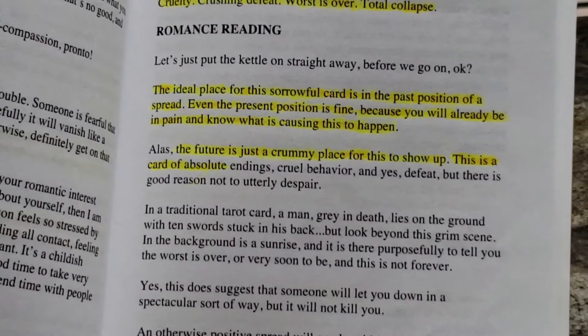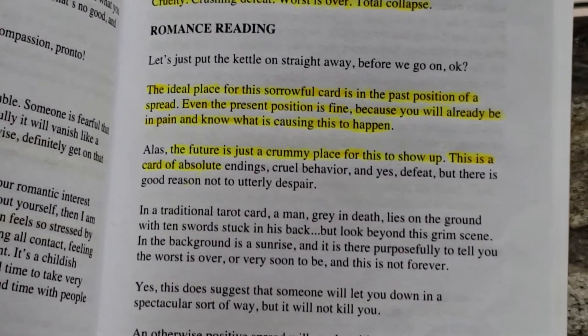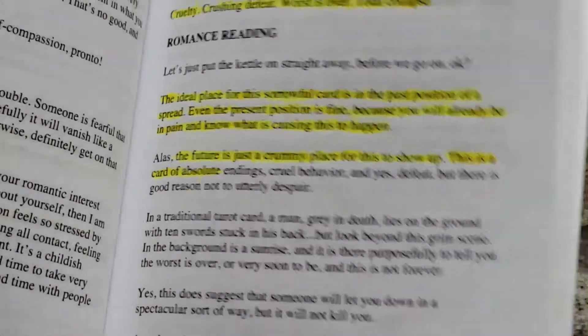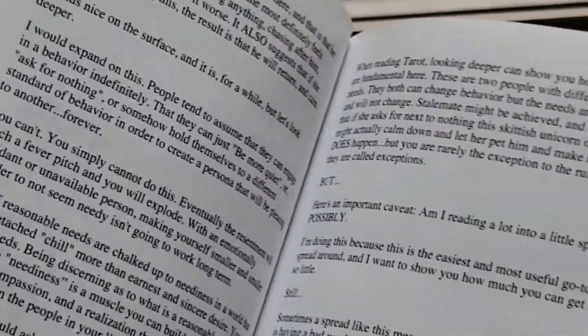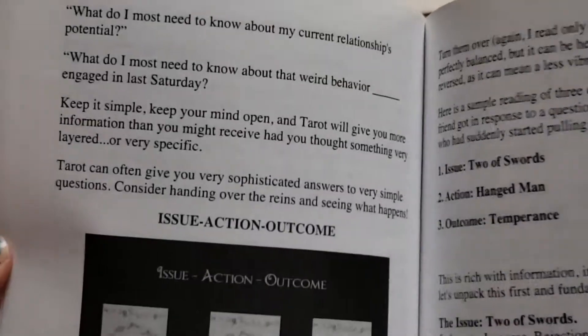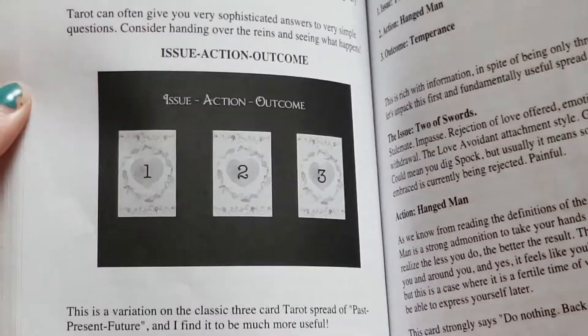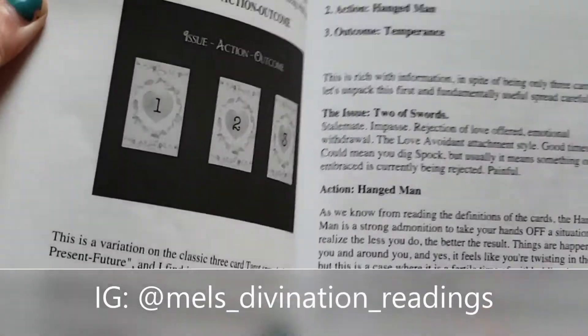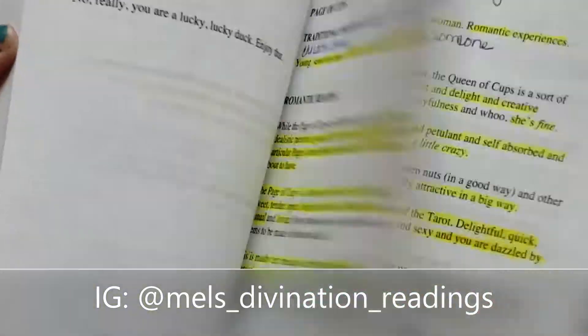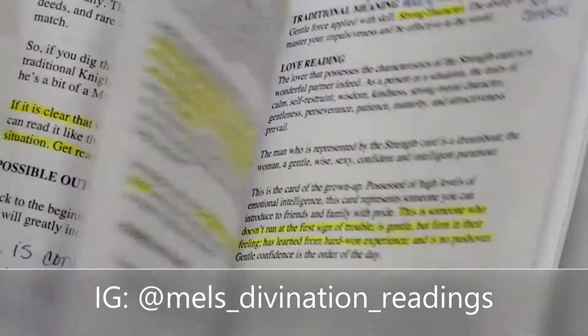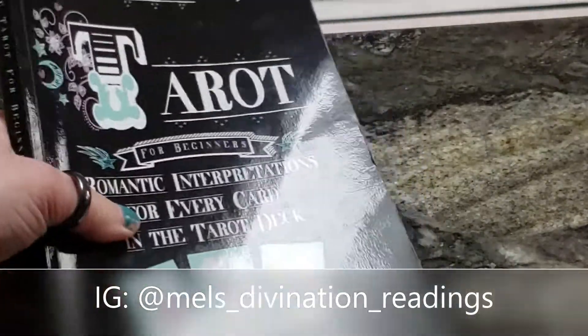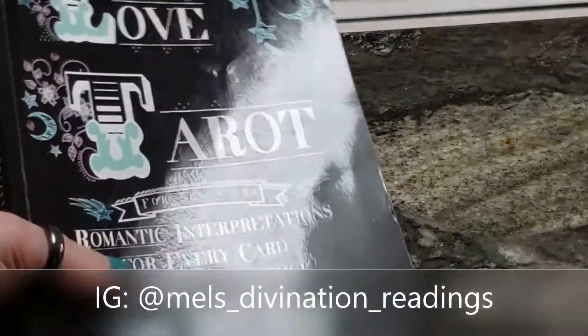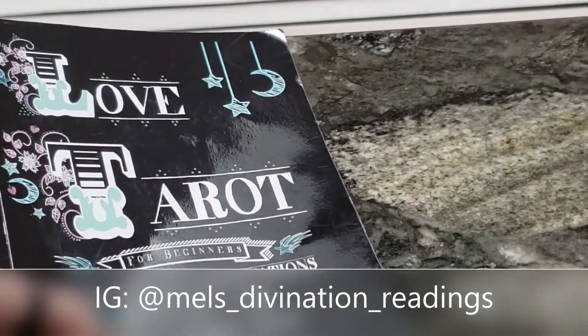Ten of Swords, the ideal place for this sorrowful card is in the past position. So that's really it. It's really just all the same thing for every card. And then in the back of it, it goes over a few different kinds of spreads. And I'm sorry that this is not ideal. We all know I'm not the best videographer. But I just wanted to give you guys a little preview of what this book looks like.